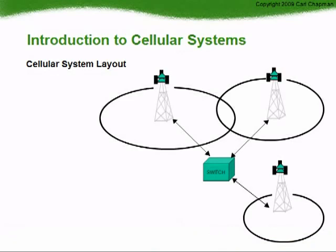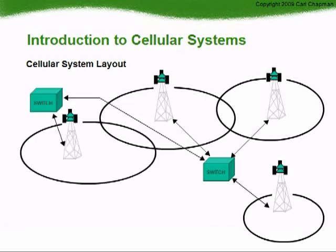The cellular system consists of a number of cell sites connected together in a cell-like structure, and linked with a computer called a switch or MTSO. To provide continuous service, the cell site coverage areas are designed to overlap. A cellular operator will often have multiple linked switches that control the connected cell sites, log all billing information, and contain current records of all cellular subscribers and calls.